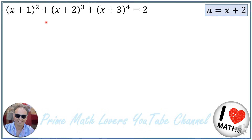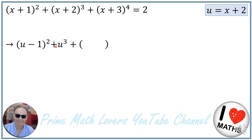First, I use an alternative variable named u and let u = x+2. I replace x+2 in this equation with u, so x+1 will be u−1, x+2 is u, and x+3 will be u+1. So the equation becomes (u−1)² + u³ + (u+1)⁴ = 2.